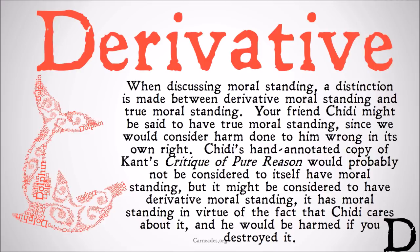Chidi's hand-annotated copy of Kant's Critique of Pure Reason, on the other hand, would probably not be considered to itself have moral standing. But it might be considered to have derivative moral standing — it has moral standing in virtue of the fact that Chidi cares about it and he would be harmed if you destroyed it. Something having derivative moral standing means it has moral standing in virtue of something with moral standing being harmed if you harmed that thing. But if those things that gave it derivative moral standing didn't exist, it would have no moral standing on its own.